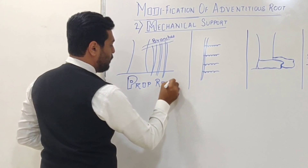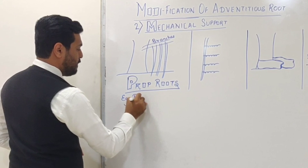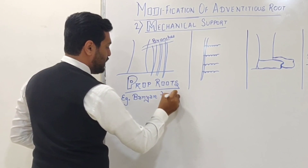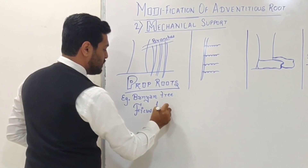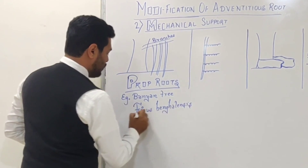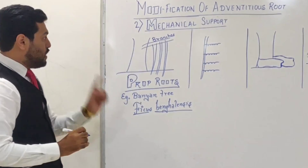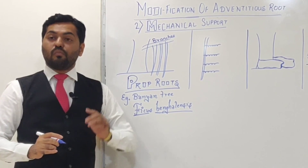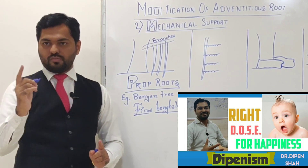The first modification in mechanical support is the formation of prop roots, and prop roots are observed in the banyan tree, whose scientific name is Ficus bengalensis. One such plant is kept in the Indian Botanical Garden, Kolkata, which is more than 200 years old and has 1700 prop roots. The function is to provide mechanical or extra support.